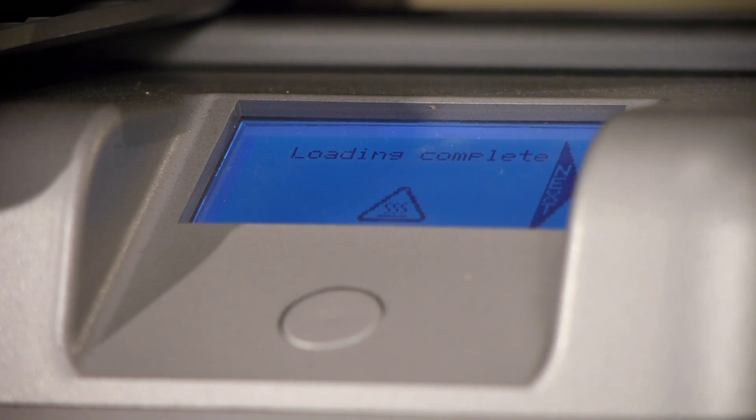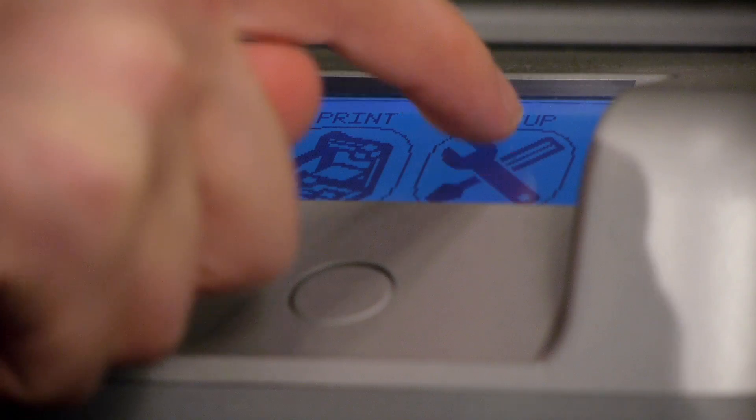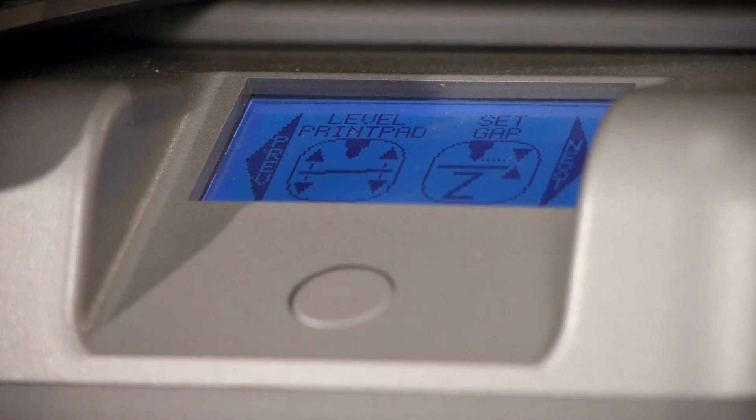Now that the material is ready, set the gap between the print jet and the print pad. Go to Setup, press Next, then hit Set Gap.